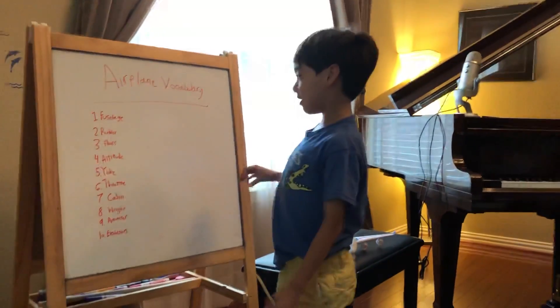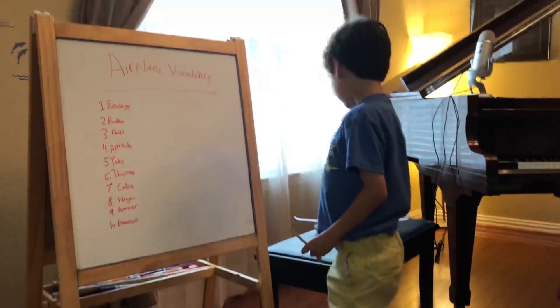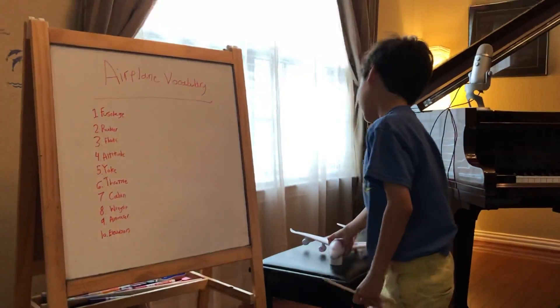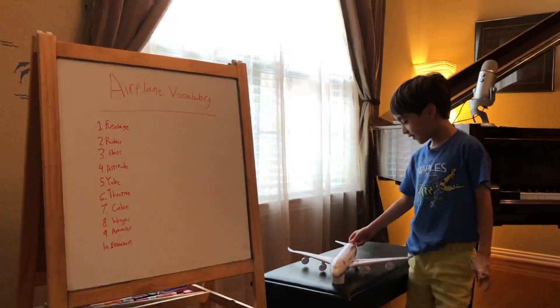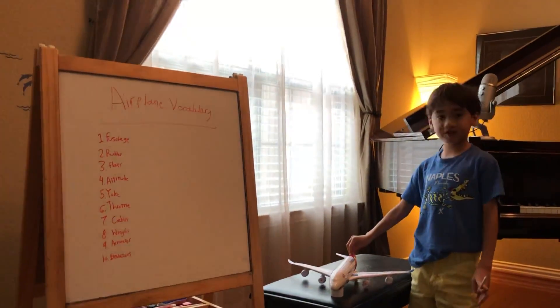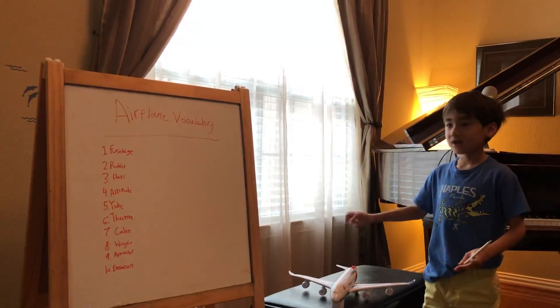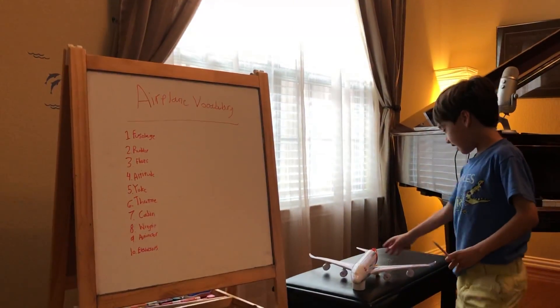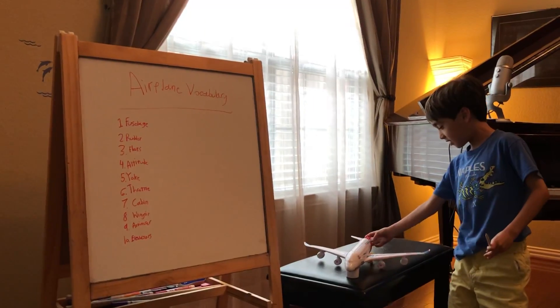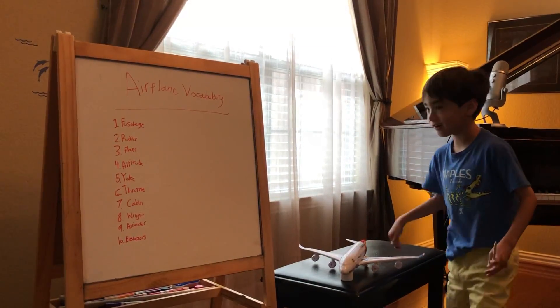There's some airplane vocabulary, a part of a plane. This is an example plane, even though it has a missing rudder, which is the fin, and it has a missing tailplane over there.